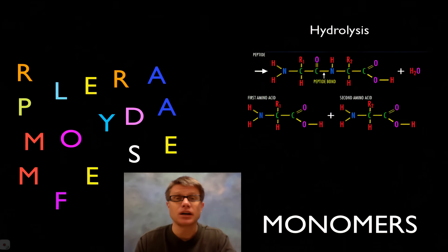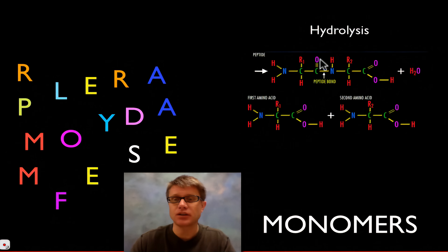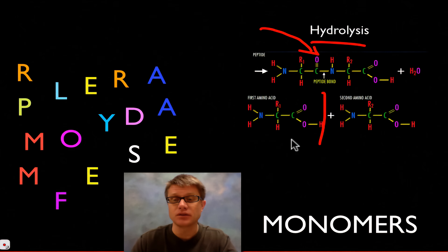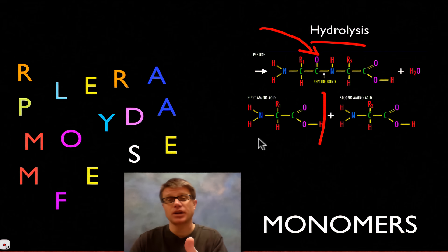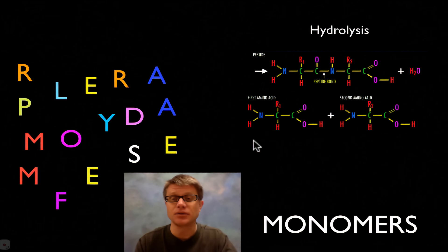Likewise if we want to break it apart — say I eat one of those Wendy's burgers and want to break down the proteins into amino acids I can use in my body — that's called hydrolysis. Hydro means water, lysis means to break. We add a water in the middle and break that bond apart, giving two amino acids. How do you build proteins? Dehydration reaction. How do you break them down? Hydrolysis. How do you build nucleic acids like DNA? Dehydration reaction. How do you break them down? Hydrolysis. Same for carbohydrates.